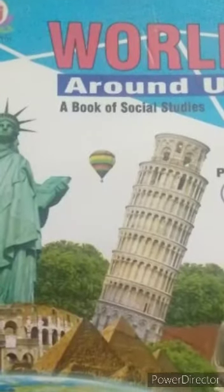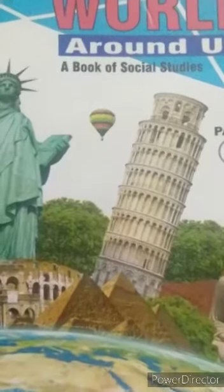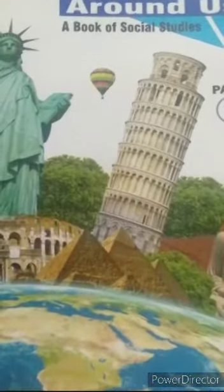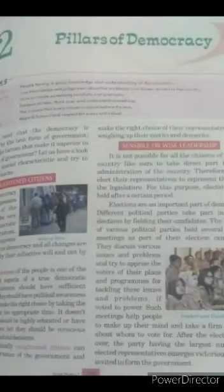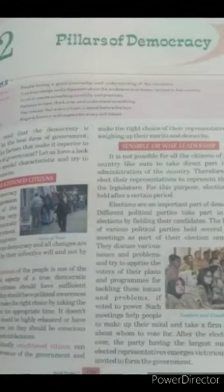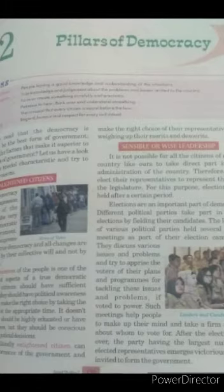Good morning everyone. Here we start Chapter 2 of Civics for Class 7, that is 'Pillars of Democracy.' We have read that democracy is considered to be the best form of government, but what are the factors that make it superior to all other forms of governments? Let us have a look at some of its special characteristics and try to ascertain the reason. Enlightened citizen.